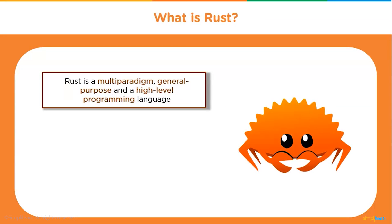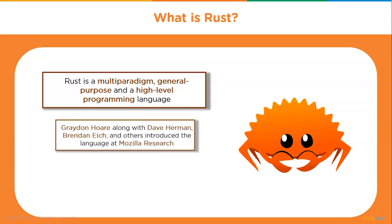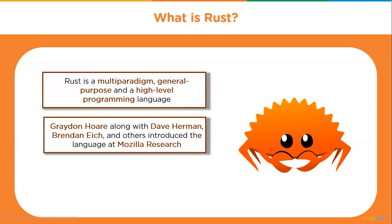Rust is a multi-paradigm, general-purpose, high-level programming language that works well for processing large amounts of data and other CPU-intensive operations such as executing algorithms. Graydon Hoare, along with Dave Herman, Brendan Eich, and others, introduced the language at Mozilla Research. It got its 1.0 version on May 15, 2015.